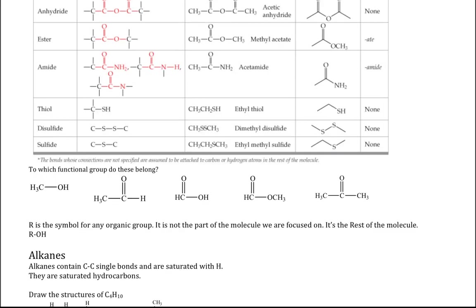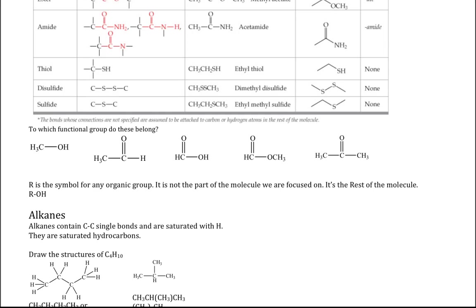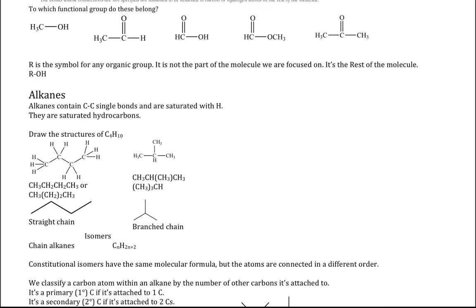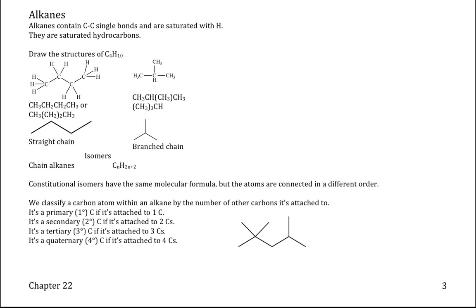Here's a problem: to which functional group do these belong? Come back and do that problem by matching up with the functional group table. Now we will talk about the different functional groups, starting with alkanes. Alkanes are carbon-hydrogen compounds containing only single bonds. We call them saturated — they have as many hydrogens as possible because they have no multiple bonds. They are saturated hydrocarbons.